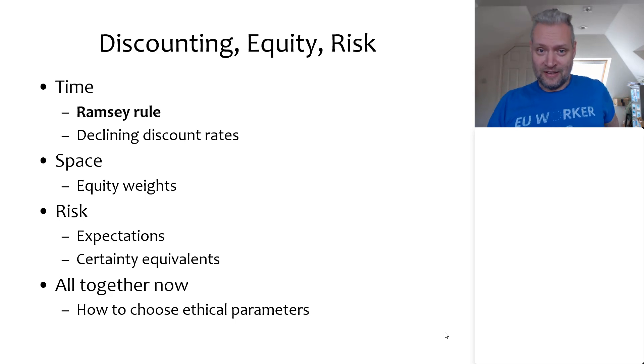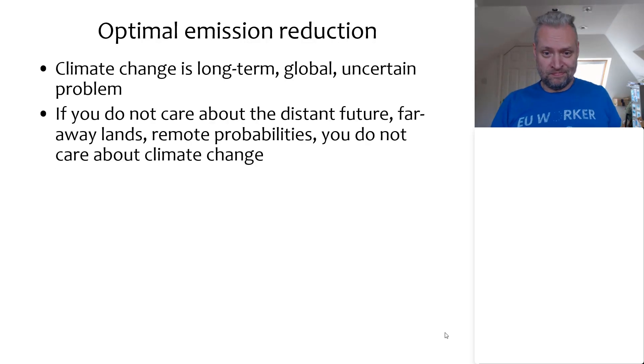But we're going to start with the Ramsey rule. The thesis I'm going to try and defend today is that if you do not care about the distant future, faraway lands and remote probabilities, then perhaps you need not care that much about climate change. And that follows from the first statement. The first statement is factual. Climate change is a long-term problem. Climate change is a global problem and climate change is an uncertain problem. There are very few people who would dispute any of these statements.